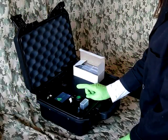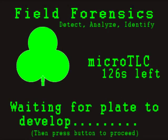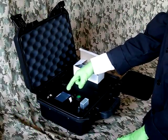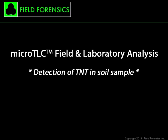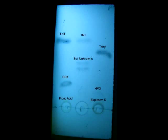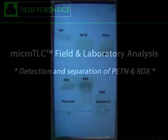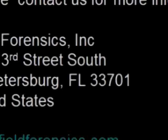The micro TLC will then turn on the UV lamp and an image of the developed plate will be displayed. This image is of TNT in soil — the sample is in the center lane. This next image shows a plate with the separation of aliphatics, PETN, and RDX.